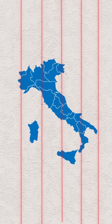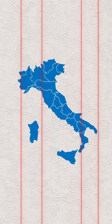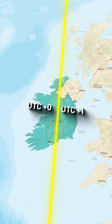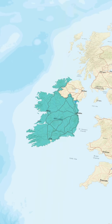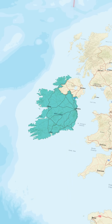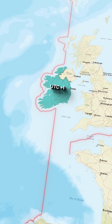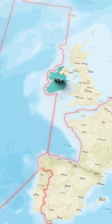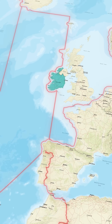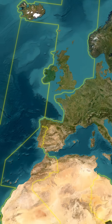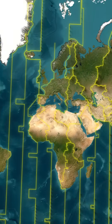Like Ireland — the time zone line once ran right through it. To avoid confusion, countries started adjusting the lines to fit their borders. That's why the time zone map looks so wavy and irregular.